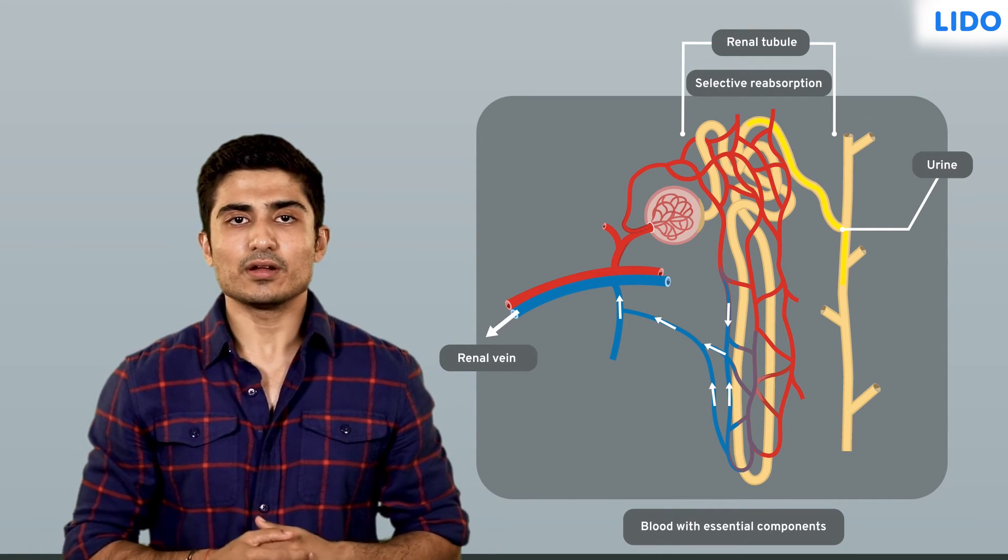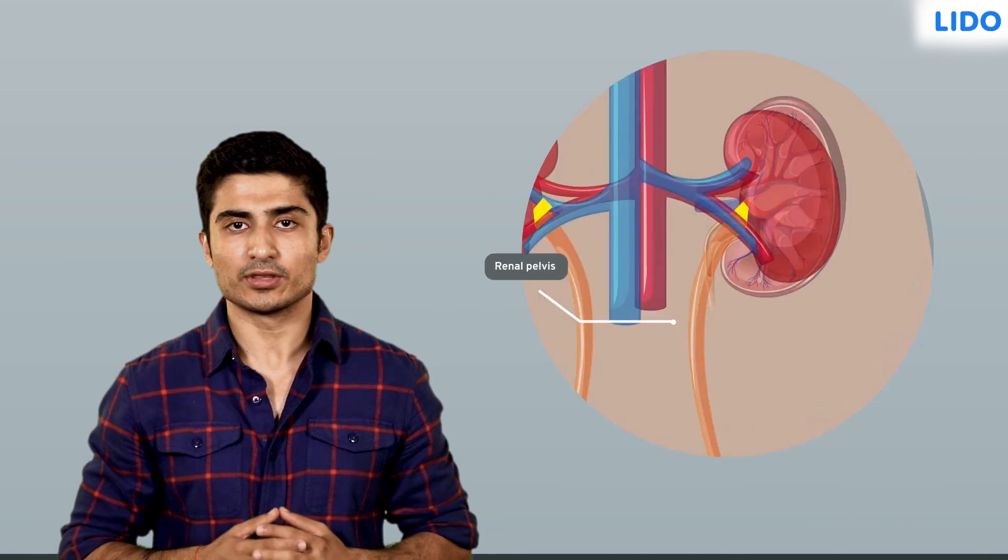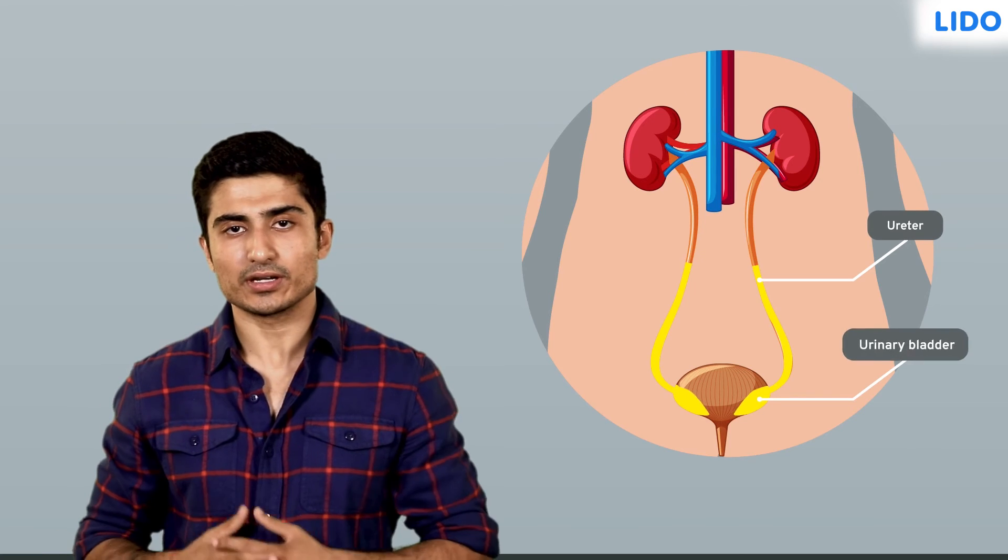Similarly, the urine formed passes to the collecting tubule and exits the kidney via the renal pelvis into the ureter and then into the urinary bladder.